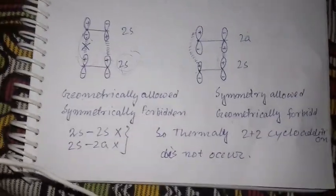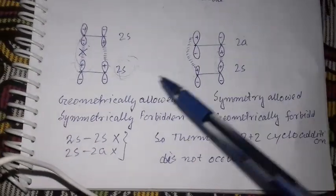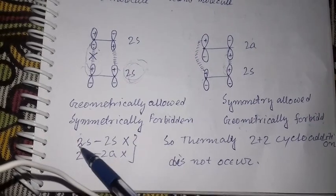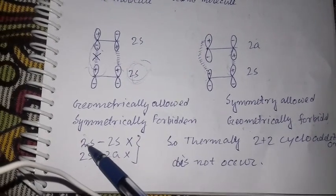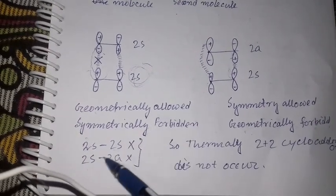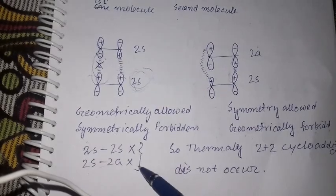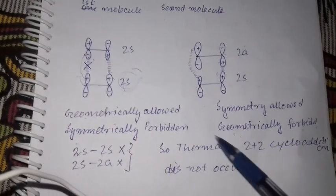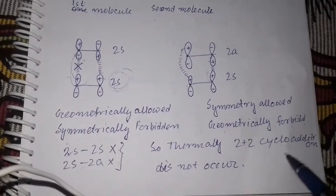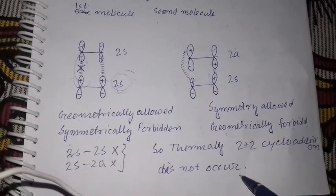We can conclude that both the supra-supra and supra-antara transitions are forbidden. Therefore, the thermally induced 2+2 cycloaddition reaction does not occur.